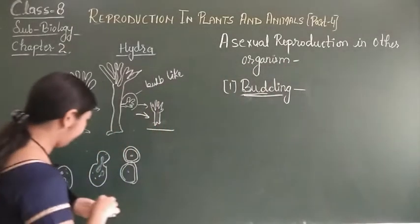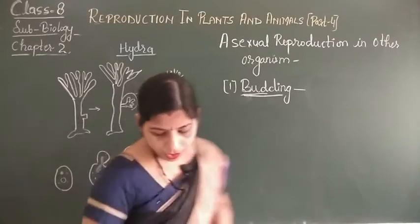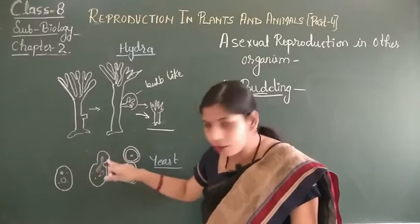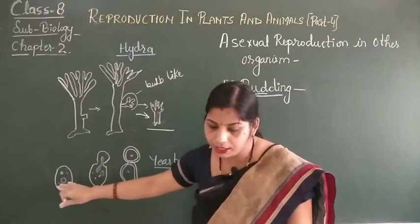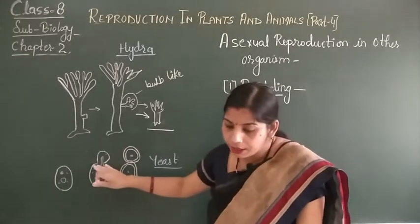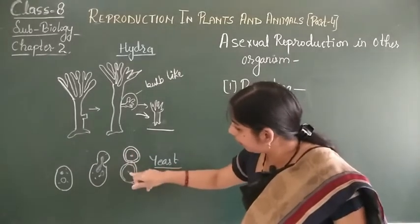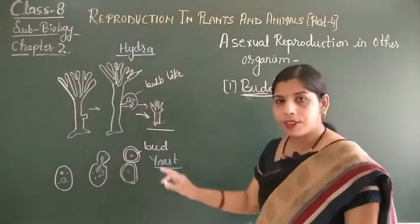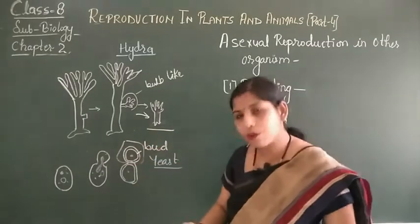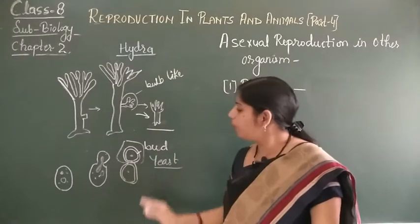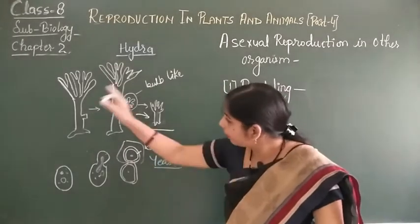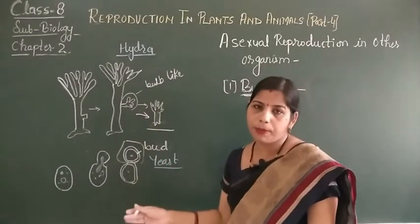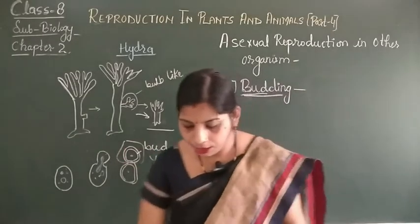Now let's see how budding occurs in yeast. As I told you, yeast is a unicellular organism. First, a bud-like projection arises, and the nucleus of the parent cell along with the cytoplasmic mass is transferred into it. This bud then completely separates into a new cell. After some time, this bud is detached from the parent body. The new yeast then germinates and grows. In the process of budding, bud-like structures arise, separate from the parent body, and then grow into new structures.